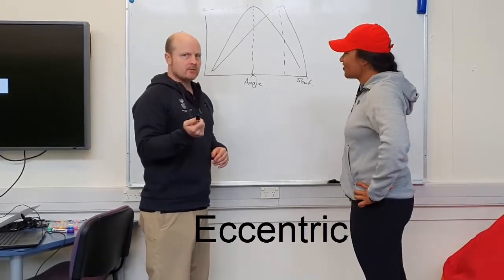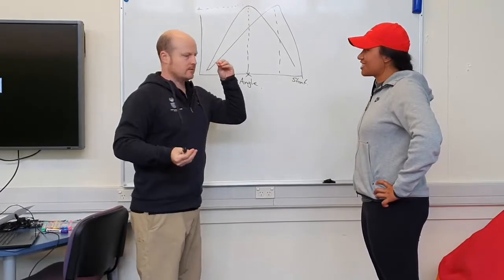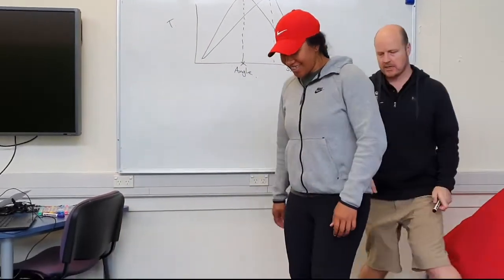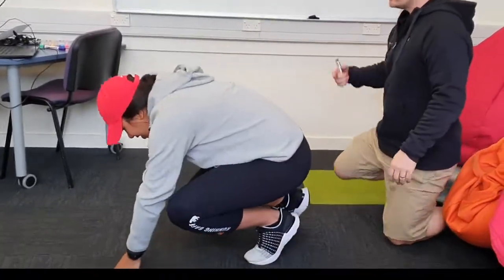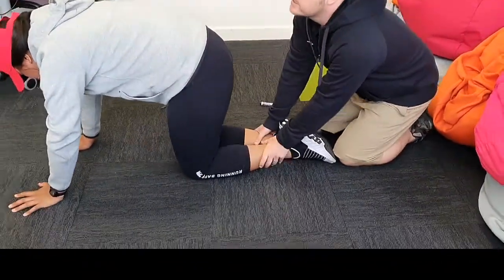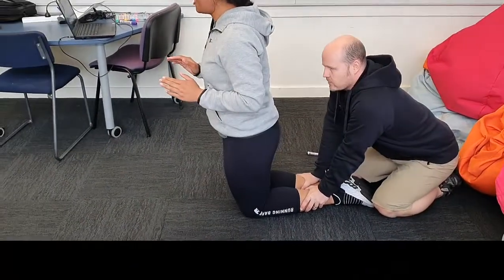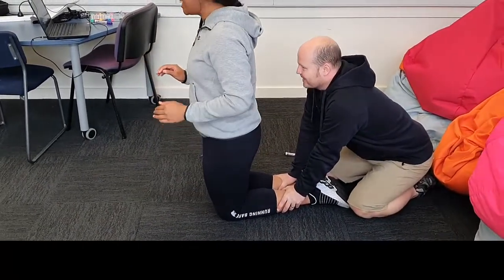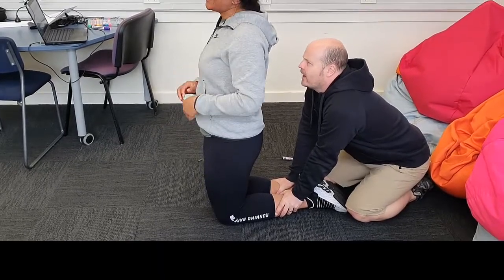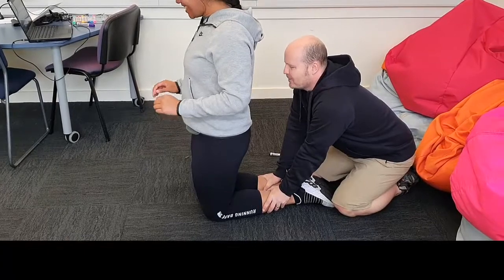So let's do one right now. On your knees. So this is the Nordic hamstring exercise. I'll hold onto your heels. Come up nice and tall and then lower down as slow as you can. Slowly, slowly. My knees. Slowly, slowly. My knees. Okay, faster than that. Just do one. Go.